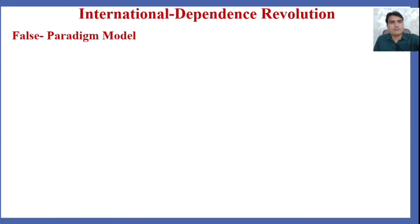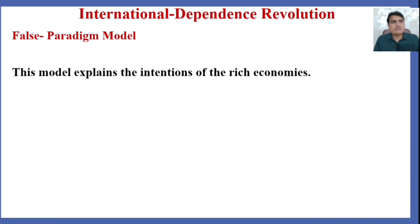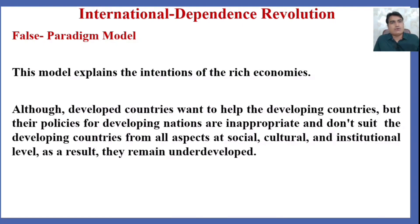In the second part of the international dependence revolution, the false paradigm model, this model explains the intentions of rich economies. Although developed countries want to help developing countries, their policies for developing nations are inappropriate and don't suit developing countries from all aspects — at social, cultural, and institutional levels.